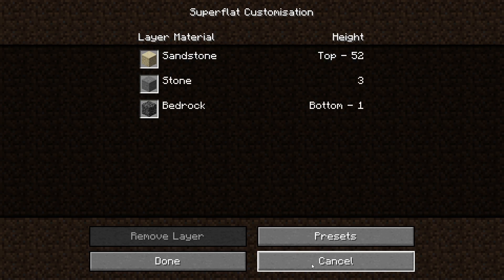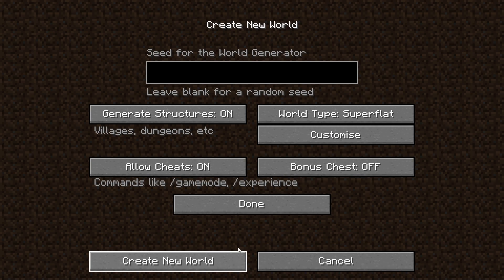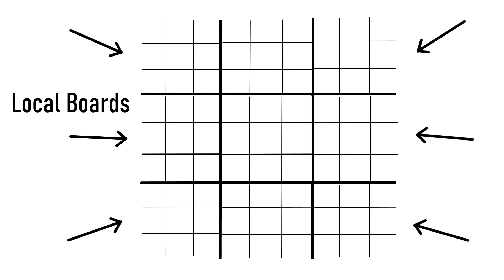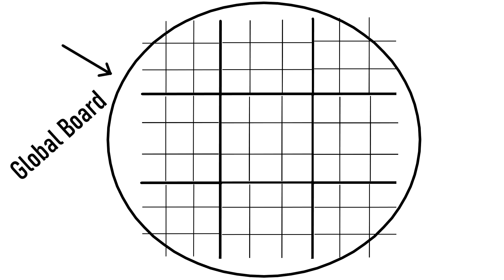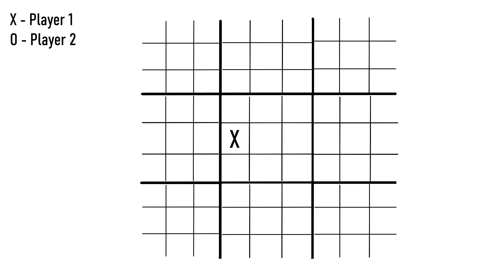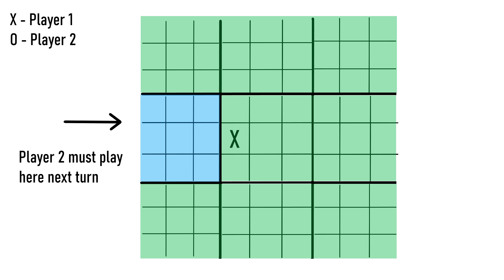I'll begin by describing Ultimate Tic-Tac-Toe. The board is just 9 normal Tic-Tac-Toe boards inside of one big Tic-Tac-Toe board. The 9 smaller boards are called local boards, and the one big board is called a global board. The game starts by having the first player choose any tile. Whatever tile they choose on that local board corresponds to the local board player 2 will have to play on next turn.